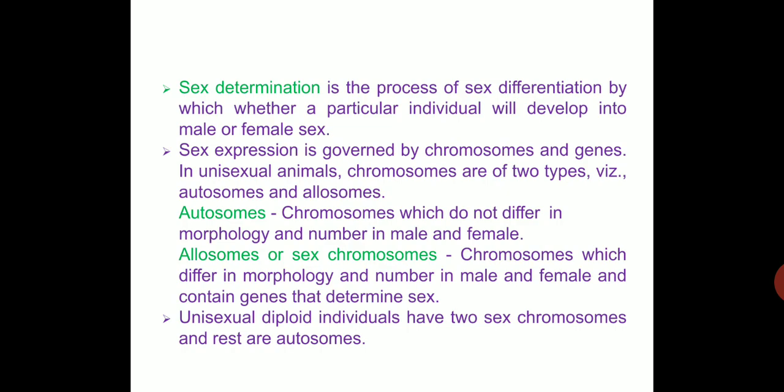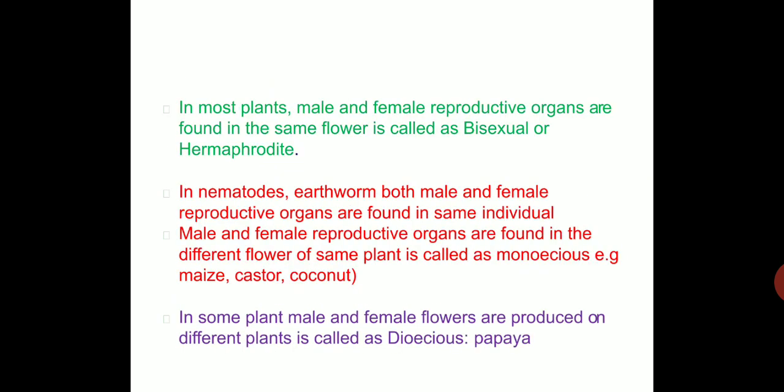In most plants, male and female reproductive organs are found in the same flower, called bisexual or hermaphrodite. In nematodes, both male and female reproductive organs are found in the same individual. When male and female reproductive organs are found in different flowers of the same plant, it is called monoecious — examples include castor and coconut. In some plants, male and female flowers are produced on different plants, called dioecious — example is papaya.